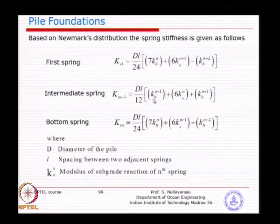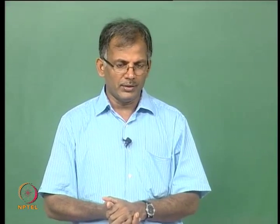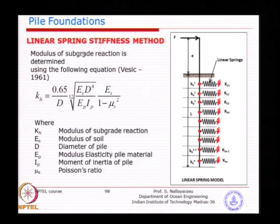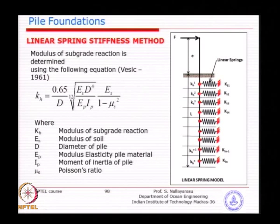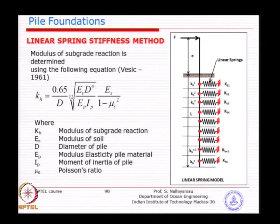KH is nothing but the modulus of subgrade reaction - the resistance against horizontal pile movement. Obtaining this reaction value is very difficult. Vesic has proposed an empirical method relating the modulus of elasticity, available from triaxial tests or specialized horizontal/vertical load tests, to obtain the ES value. Using that ES value, he related the pile flexibility into a factor so that soil displacement depends on how much the pile will deflect.